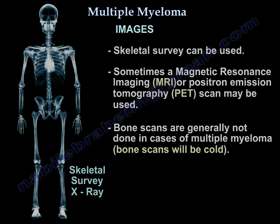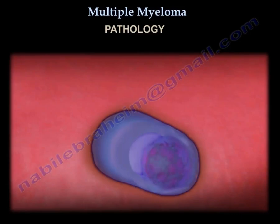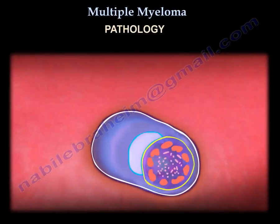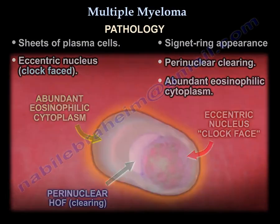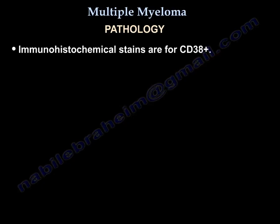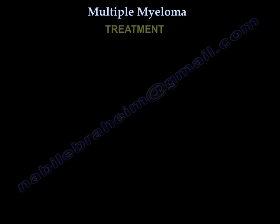On pathology, you will find sheets of plasma cells with a signet ring appearance, eccentric nucleus, clock-face nucleus, and perinuclear clearing, with abundant eosinophilic cytoplasm. The stains will be positive for CD38.